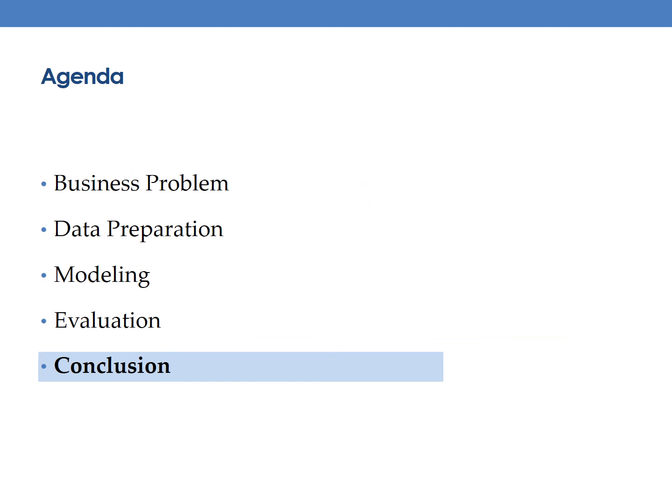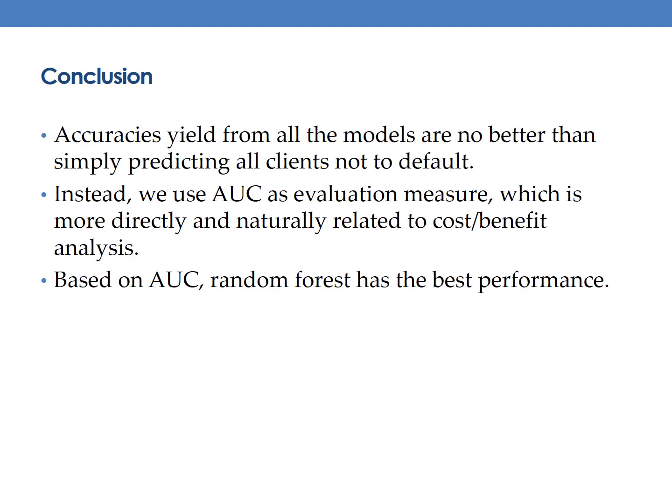Now, here comes to our conclusion. Accuracy yield from all our models are no better than simply predicting all clients not to default. Instead, we use area under the curve as evaluation measure, which is more directly and naturally related to cost and benefit analysis. Based on area under the curve, random forest has the best performance. Once we have new entries of data, we can feed them into the random forest model, and we can make predictions.